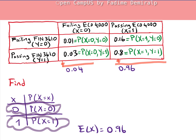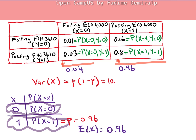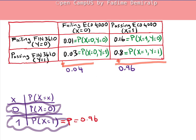For the variance of X, since X is a binary variable, I use the result from the previous video: Var(X) = p·(1 − p), where p is the probability of success. We found the marginal probability p = 0.96, so the variance is 0.96 × 0.04 = 0.038. This is the marginal distribution of X.